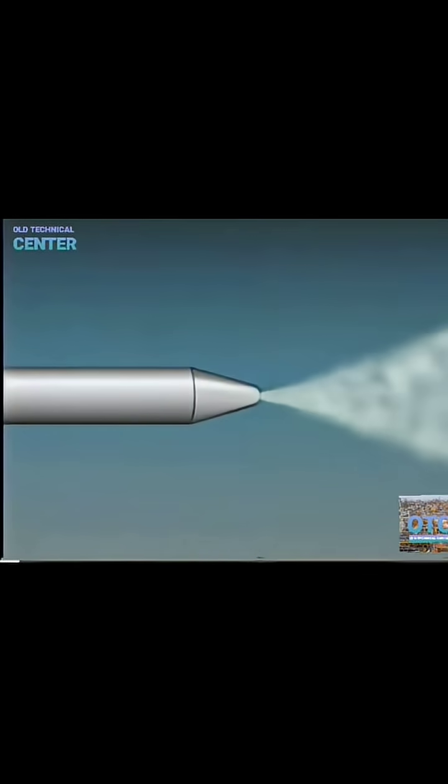The steam first passes through a restriction called a nozzle. The purpose of the nozzle is to convert the steam's pressure into velocity. As the steam passes through the nozzle, it speeds up.